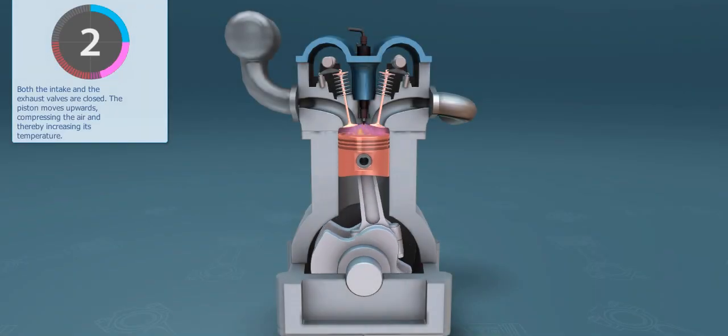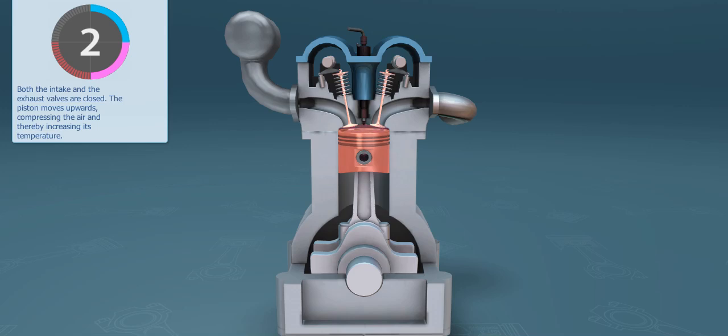The second stroke is the compression. Both the intake and the exhaust valves are closed then. The momentum of the crankshaft and the counterweight causes the piston to move upwards, compressing the air and thereby increasing its temperature.